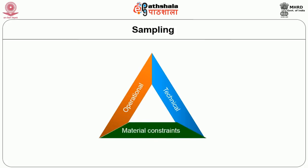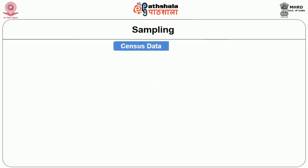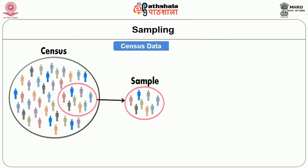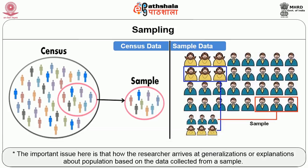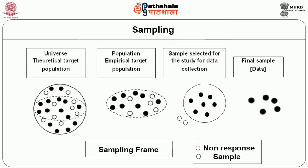Operational, technical, and material constraints of research may demand collection of data from a set of elements drawn from the population instead. If data are collected from all the elements of the population, it is referred to as census data. If data are collected from a few selected respondents, it is referred to as sample data. Sampling involves selection of some or all elements of population with the intention to explain the properties of the population. The elements selected for systematic observation or data collection are referred to as the sample.